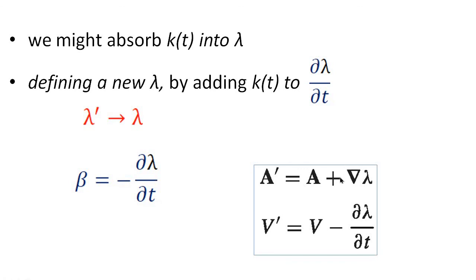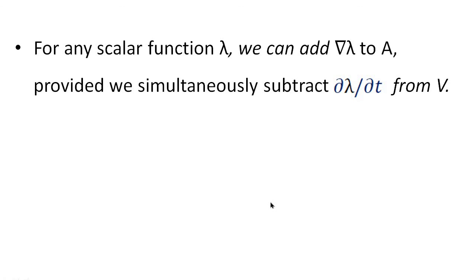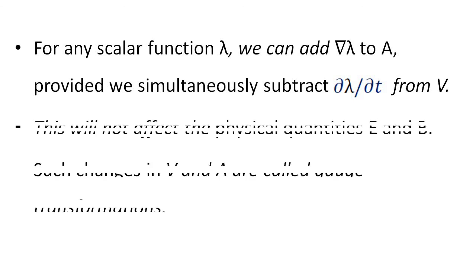So we can add grad(lambda) to A, but we have to simultaneously subtract d(lambda)/dt from V. For any scalar function lambda, we can add del(lambda) to A provided we simultaneously subtract d(lambda)/dt from V. This will not affect the physical quantities E and B. Such changes in V and A are called gauge transformations.